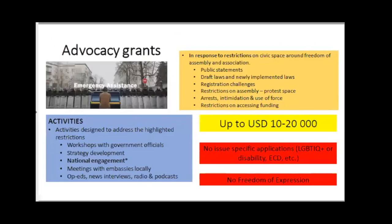The first grant on offer is an advocacy grant. This type of emergency assistance must be in response to a specific restriction that an organization is facing. It can include restrictions because government officials have made public statements condemning civil society, because draft laws or newly implemented laws restrict freedom of assembly and association, or because organizations are facing registration challenges — for example, being told they can only register through consultation with the minister or can only receive certain types of funding.